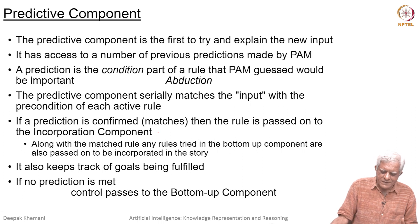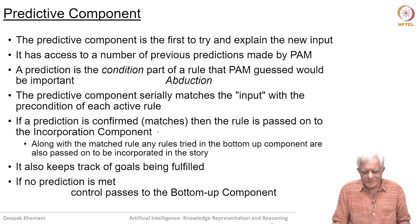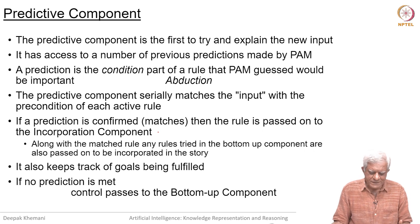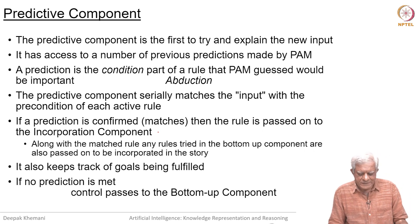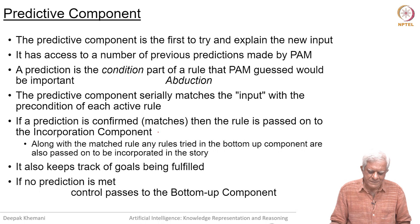If a prediction is confirmed, then the rule is passed on to the incorporation component along with the matched rules and any rules tried in the bottom-up phase. It also keeps track of goals being fulfilled, and if no prediction is met, then it passes control to the bottom-up component which tries to infer something that will match the prediction.